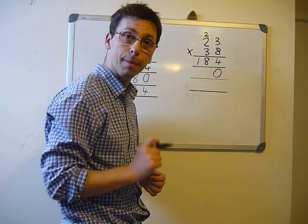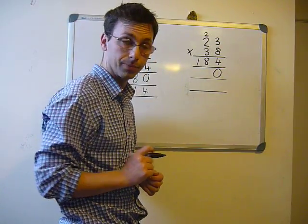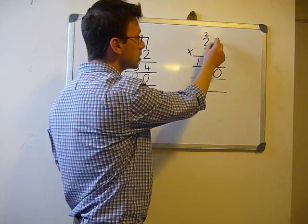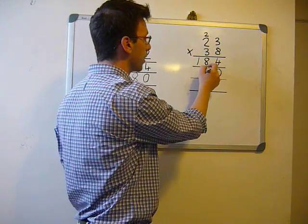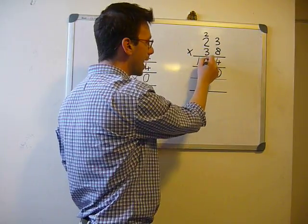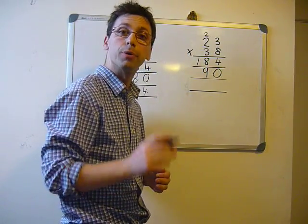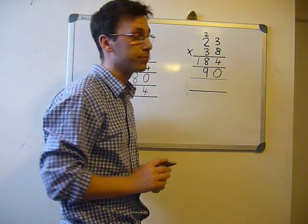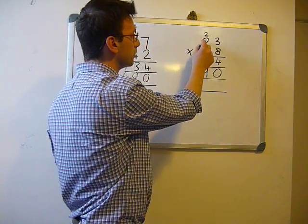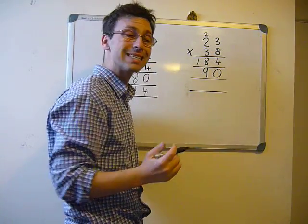Remember we are going diagonally. 3 times 3 equals 9. Place the 9 underneath each other, and that's important because when we count we don't get confused. 3 times 2 equals 6.